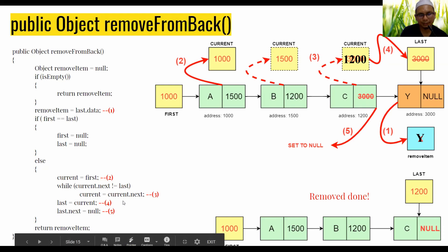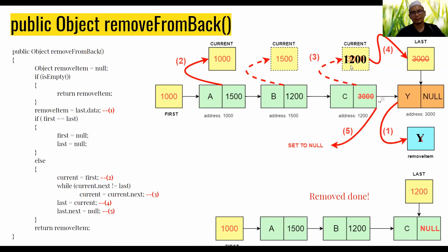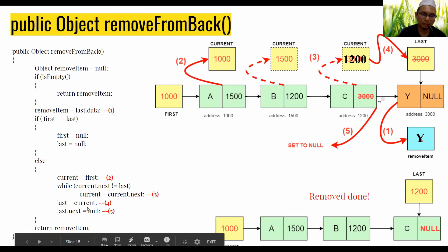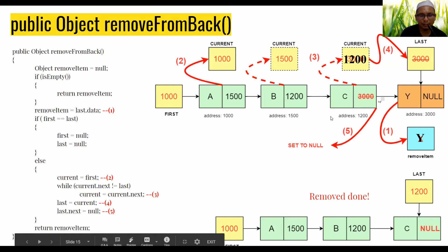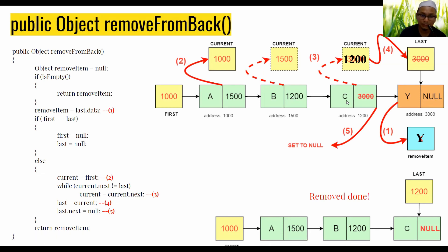After finding the second last, we get current.next, which gives the address of the last node. This is stored into current. Then we assign current to last, so the last pointer now points to the second last node containing C.